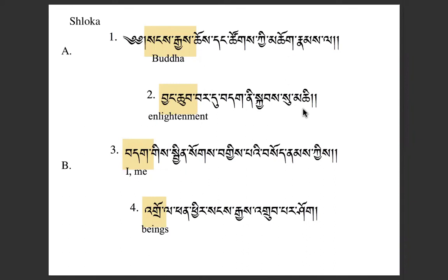Line two is: until enlightenment, I go for refuge. The I is emphasized — I'm taking refuge until enlightenment. Lines one and two fit together to make part A: in the Buddha, Dharma, and Sangha, until enlightenment, I go for refuge. And that's our part A.